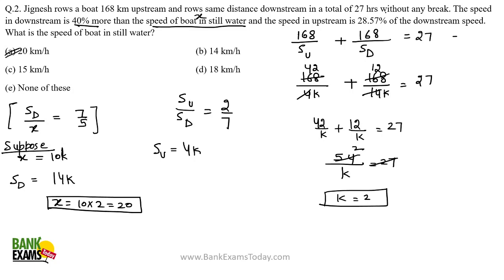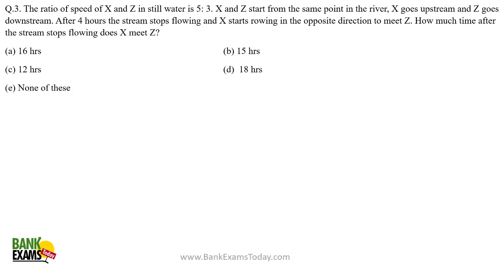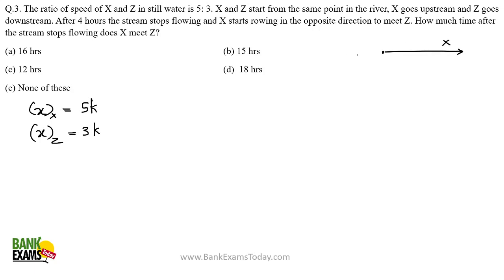Next question: the ratio of the speeds of boats X and Z in still water is 5:3. So speed of boat X = 5k and speed of boat Z = 3k, where k is a constant. X and Z start from the same point in the river; X goes upstream and Z goes downstream.